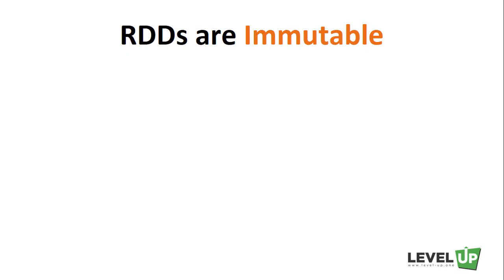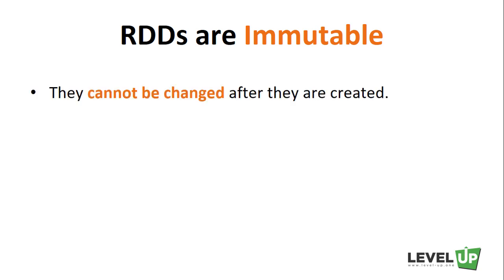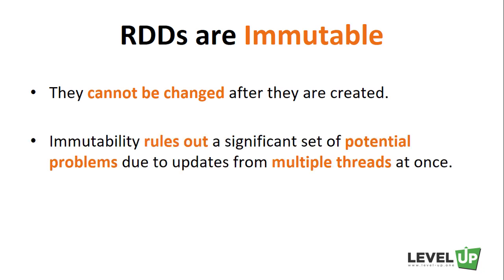Secondly, RDDs are immutable — they cannot be changed after they are created. You might want to ask why RDDs are designed to be immutable. Immutability rules out a significant set of potential problems due to updates from multiple threads at once.